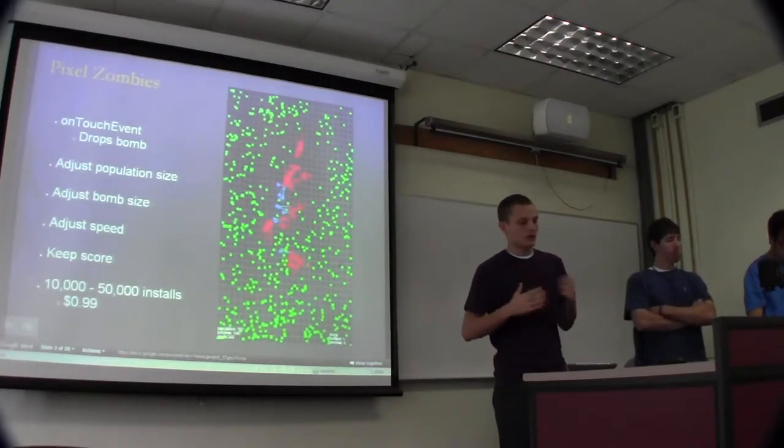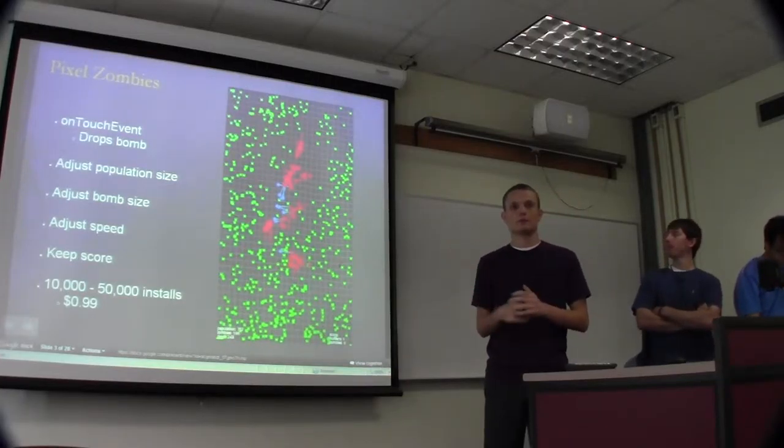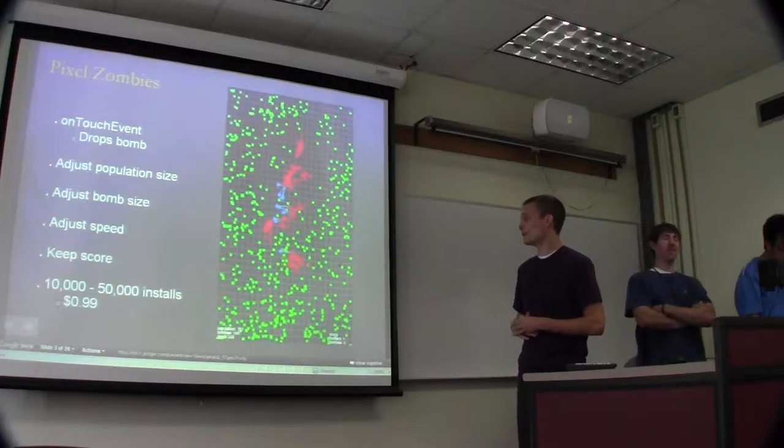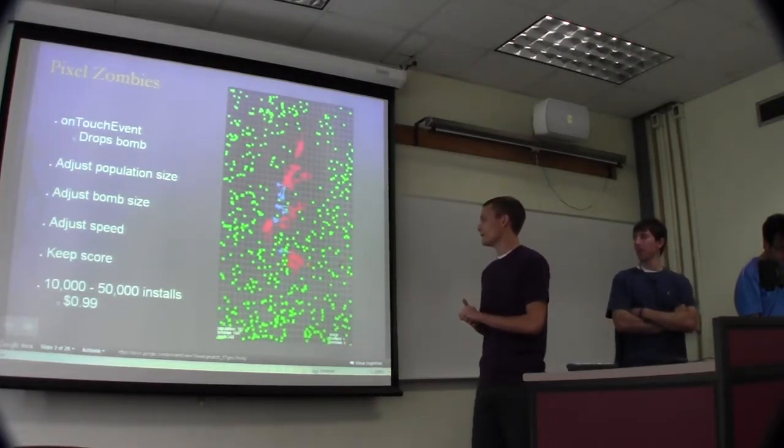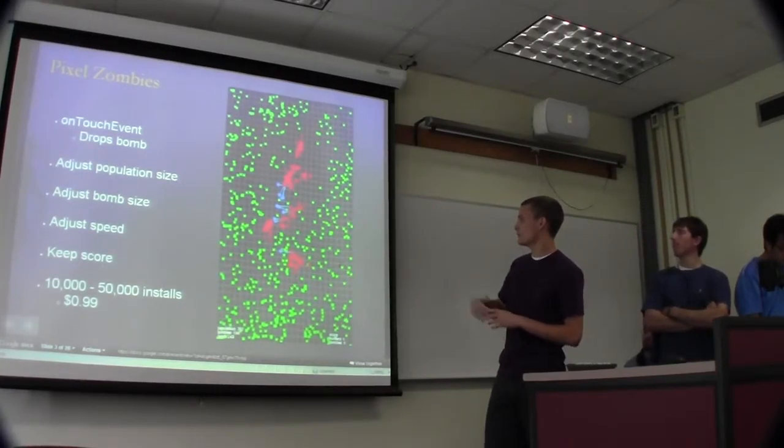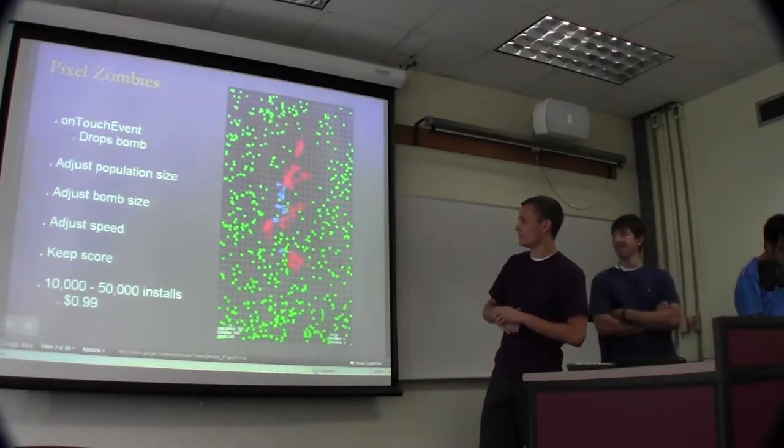So I'll go back and forth between examples and text, but nothing catches people's attention like zombies. Our first example of a live wallpaper is Pixel Zombies. You have to use your imagination a little bit here, but all these pixels are constantly moving on your screen. The green are civilians, red are zombies, blue are the hunters and you can see the hunters zapping zombies.